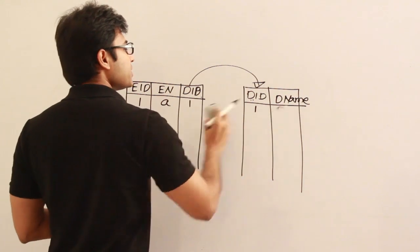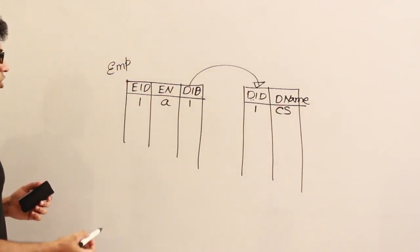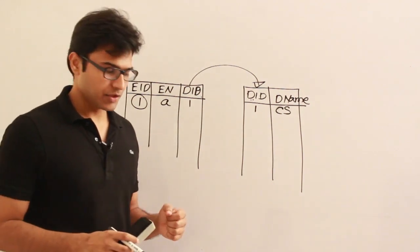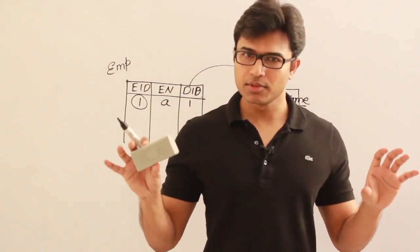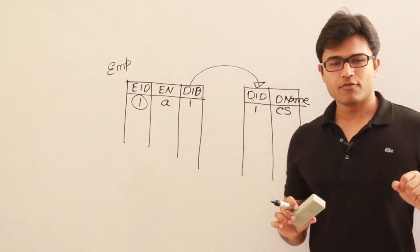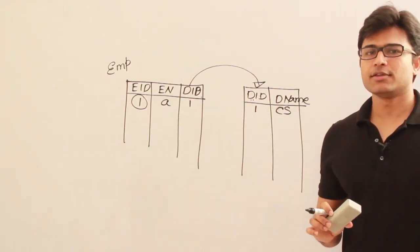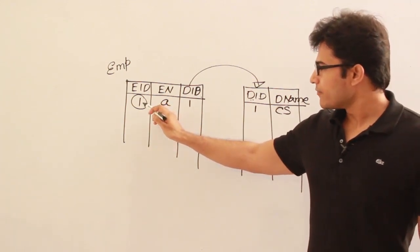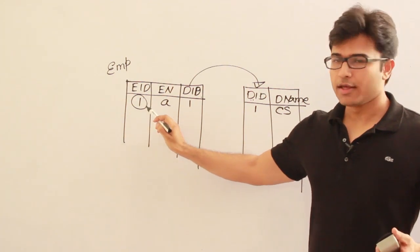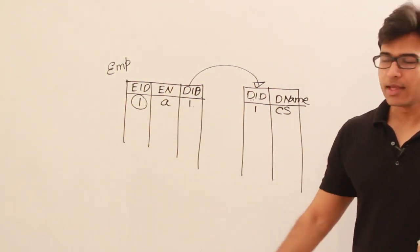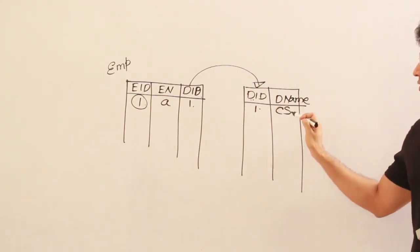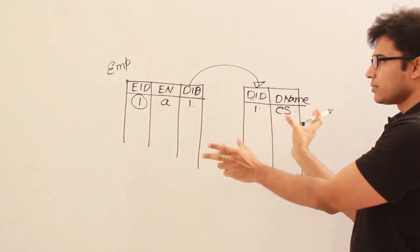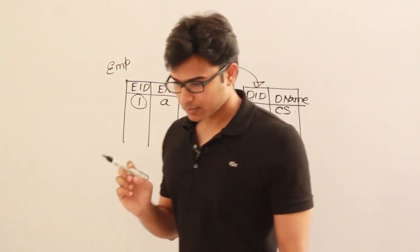The department table has department number one with department name 'Computer Science.' If you want to know the name of the department in which employee number one works, such queries are very common. This requires going through many tables — first finding the department number for employee one, then looking up that department to find its name.